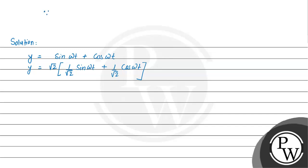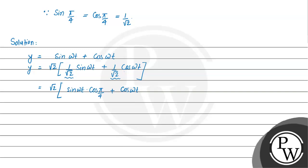Since we know that sin(π/4) equals cos(π/4) equals 1/√2, we can substitute: the term 1/√2 equals cos(π/4) multiplied by sin(ωt), plus 1/√2 equals sin(π/4) multiplied by cos(ωt).